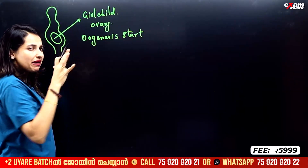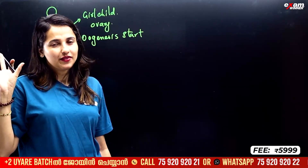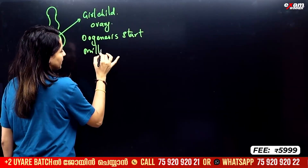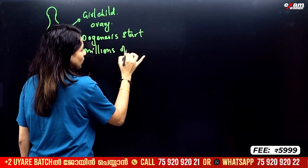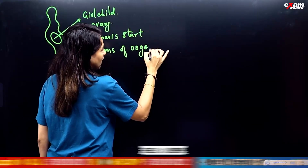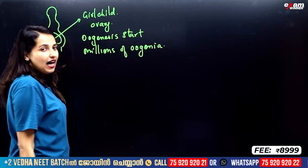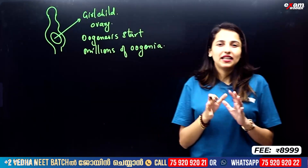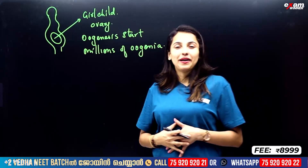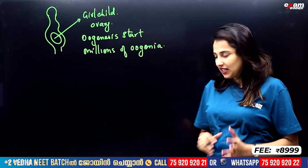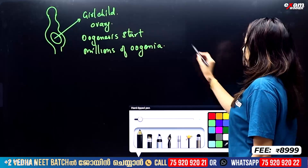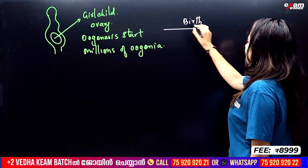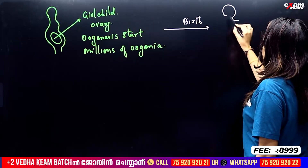The ovary starts producing oogonia. Millions of oogonia are formed in the ovary of the girl-child during her lifetime in the uterus. The ovary fills with millions of oogonia. This is our girl-child at birth.